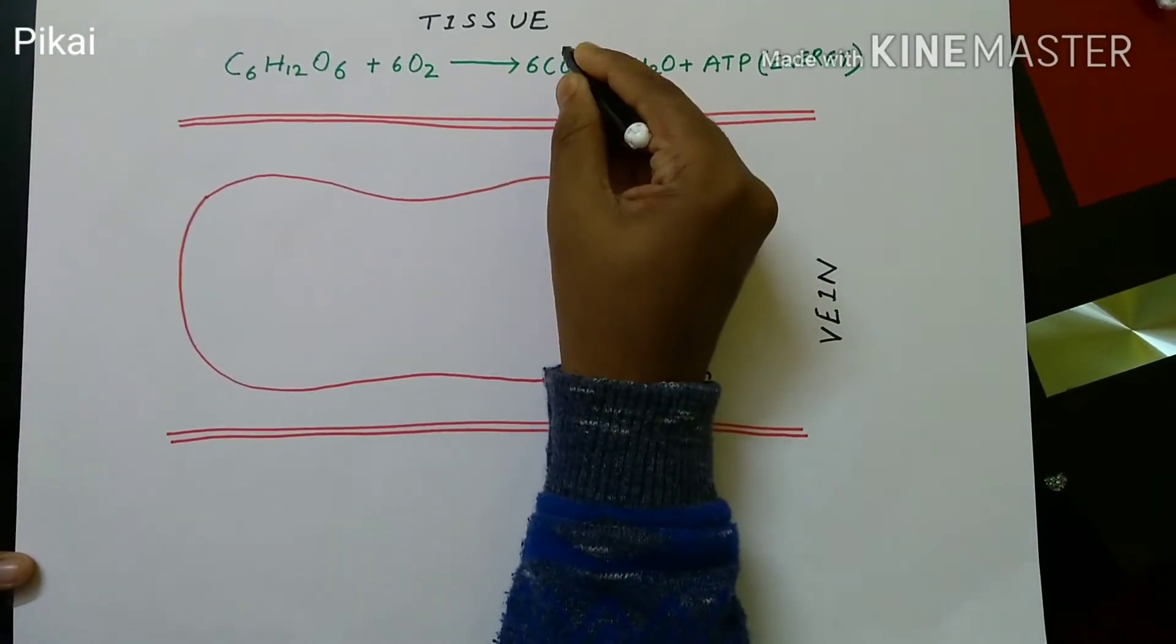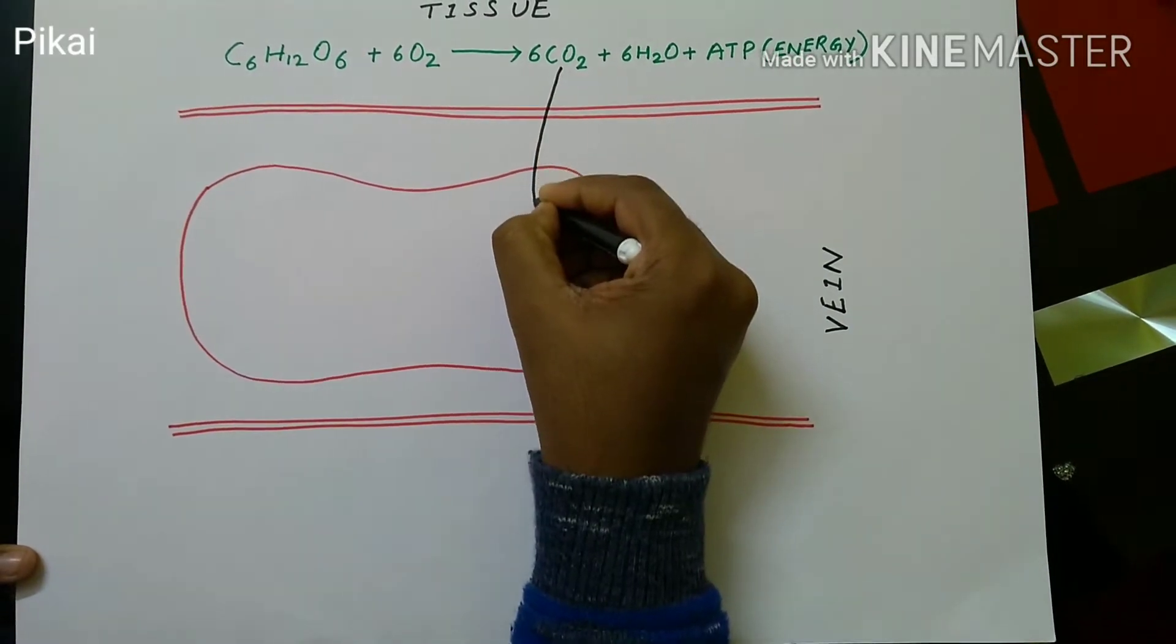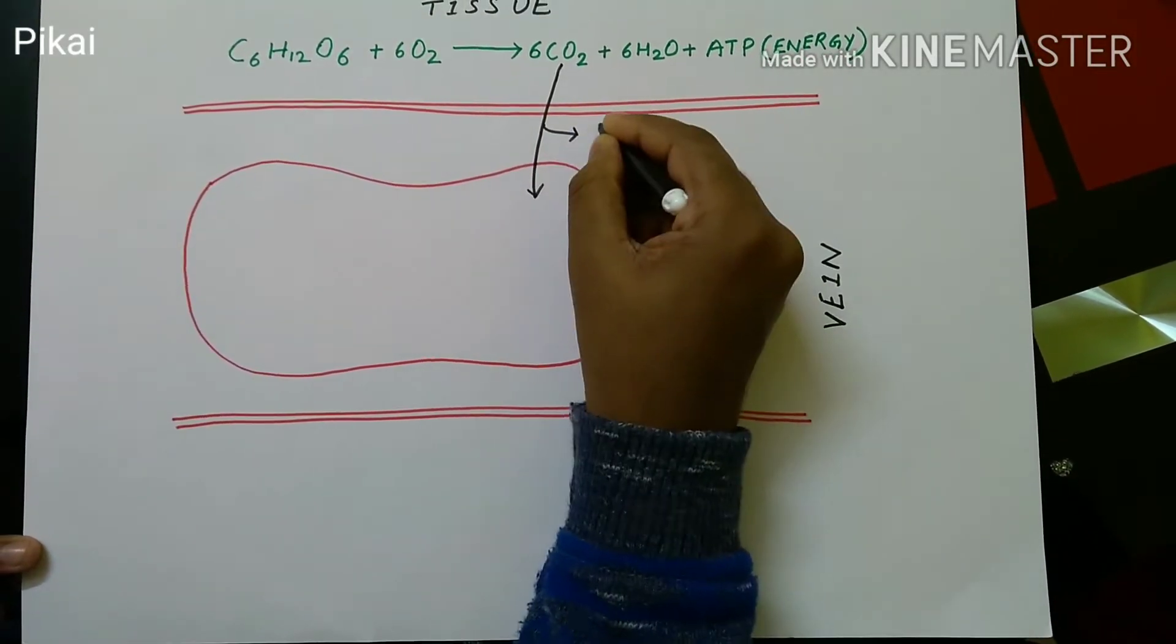Breakdown of glucose happens in the tissue which leads to the formation of CO2, H2O and ATP.